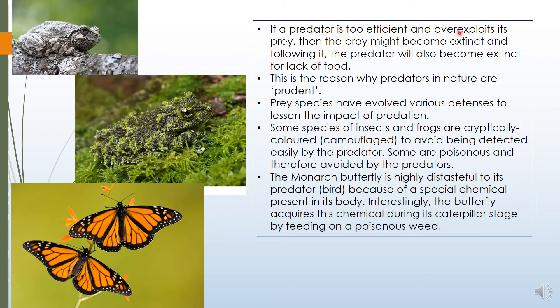If a predator is not efficient and over-exploits its prey, the prey might become extinct and following it the predator will also become extinct for lack of food. If there is no carnivore, the herbivore population can increase — for example, if the deer population increases rapidly, they will eat more plants, decreasing the plant population in that habitat. This is why predators in nature are prudent. Prey species have also evolved various defenses to lessen the impact of predation.